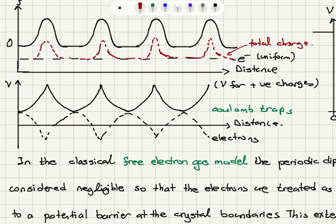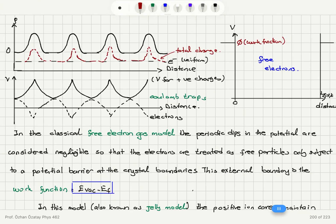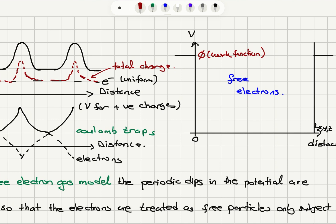Looking at the potential profile: for positive charges, as we approach the ion core the potential increases due to repulsive interaction. But for electrons, we have what we call Coulomb traps — dips in the potential acting as potential wells as the electron approaches the ion. In the classical free electron gas model, we neglect these periodic dips in the potential. Electrons are treated as completely free particles, subject only to one potential barrier at the crystal boundaries — this is the work function.